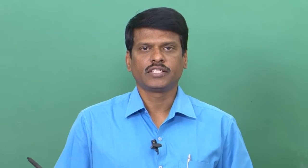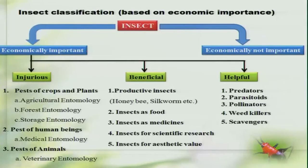Basically, insects as a group can be related to human beings in two different ways. For example, the insects which are economically important and those groups of insects which are not economically important — it is from the human point of view. So under the economically important group, we are more interested in, and we are ignoring the insects which are not economically important.